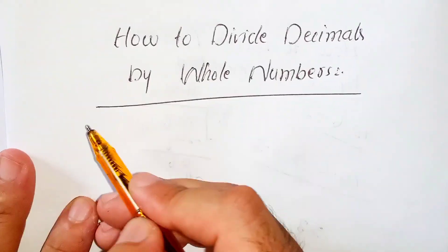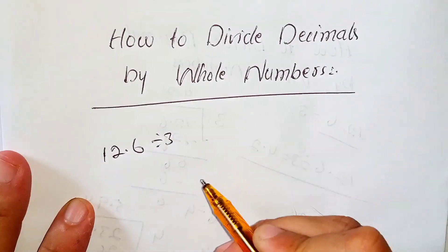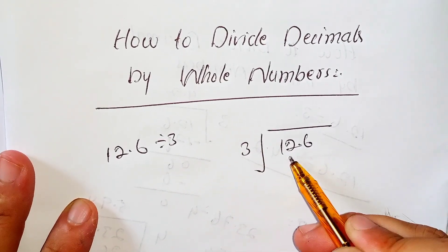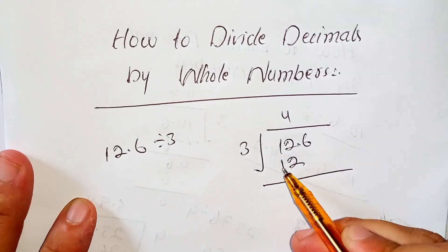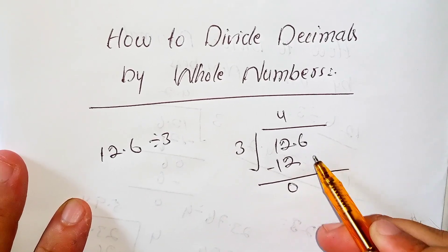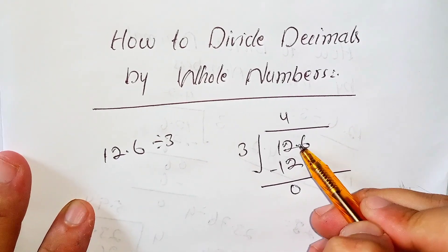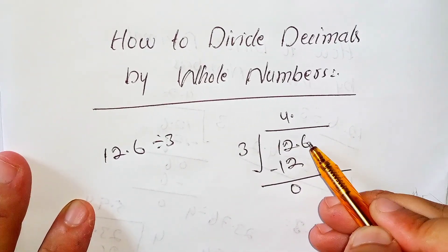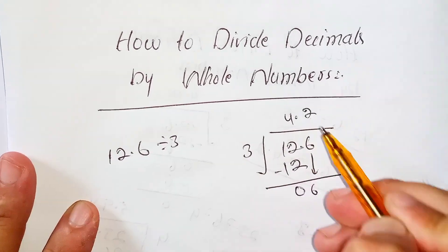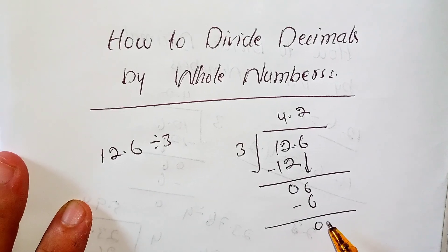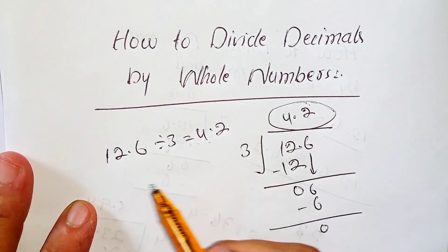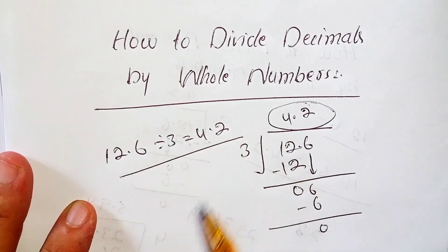We will start with the example 12.6 divided by 3. How many times does 3 go into 12? 3 times 4 is 12. Subtract 12 from 12 — the remainder is 0. We see there is a decimal point, so we put the decimal point in the quotient after the 4, then bring down the 6. How many times does 3 go into 6? 3 times 2 is 6. Subtract — remainder is 0. So 12.6 divided by 3 equals 4.2.